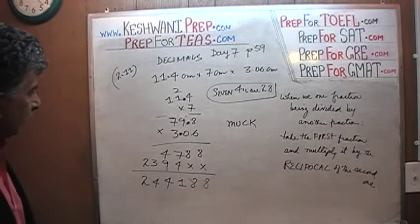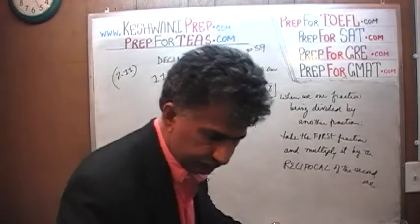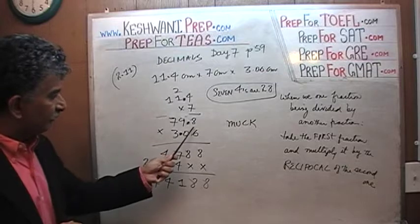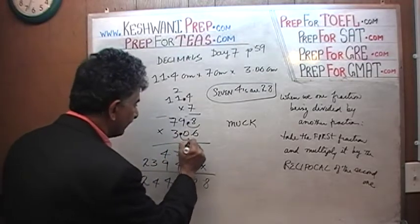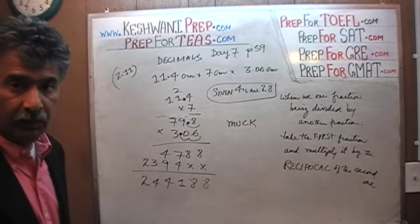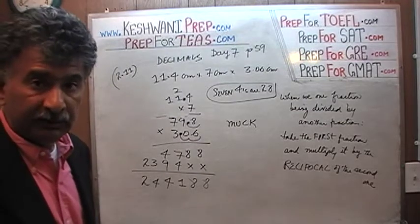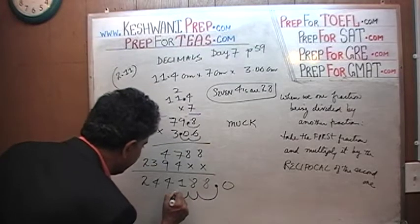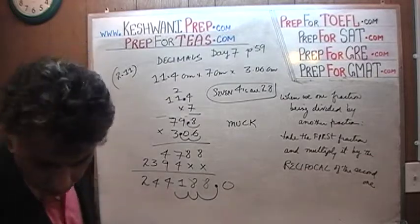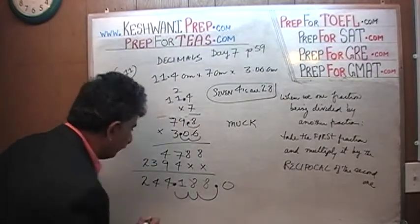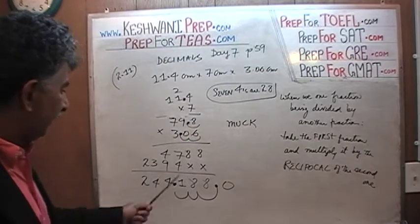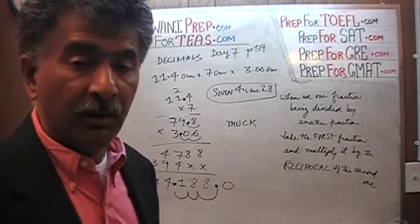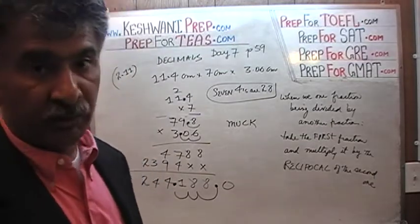So that's 79.8 times 3.06. This has 1 decimal place and this one has 2 decimal places, which means we just move the decimal 3 places to the left. Here is our decimal place — moving 3 places: 1, 2, 3. The answer is 244.188, which is the precise answer. A precise answer is not something we really need for the exam — what we need is a good estimate.